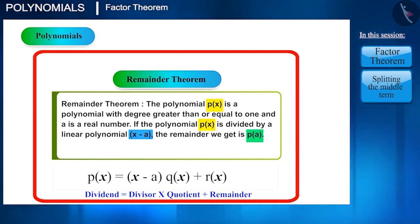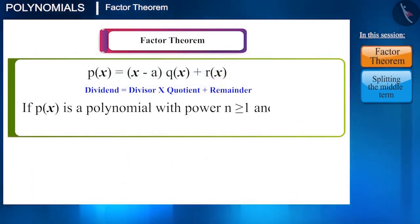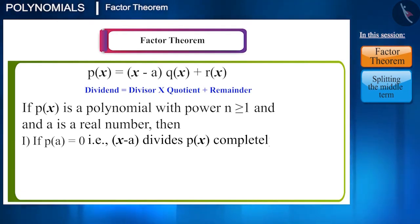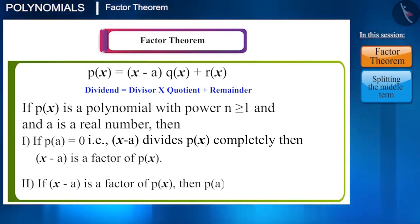Taking this theorem one step further, the factor theorem states that if p(a) gives the remainder 0, that is, if x minus a divides p(x) completely, then x minus a is a factor of p(x). And if x minus a is a factor of p(x), then p(a) will be 0.